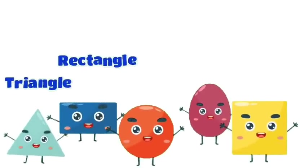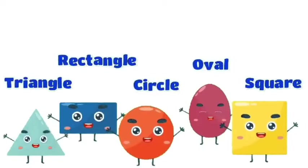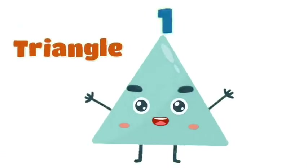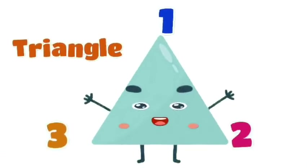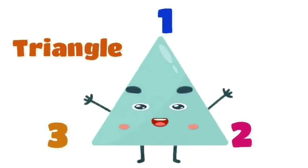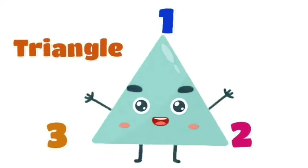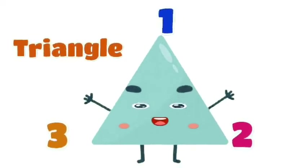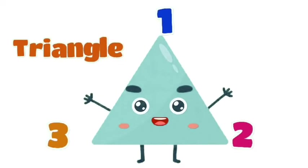Triangle, rectangle, circle, oval, square. I'm a triangle with three sides, three straight sides. I'm a triangle with three sides, three straight sides. Three straight sides. I'm a triangle with three sides and a pointy head.